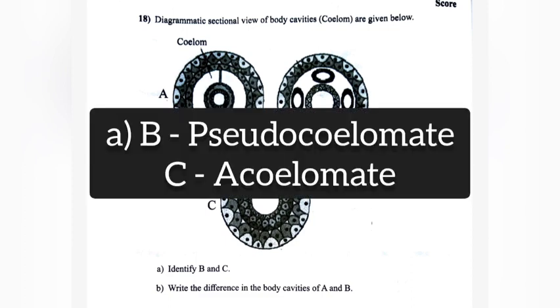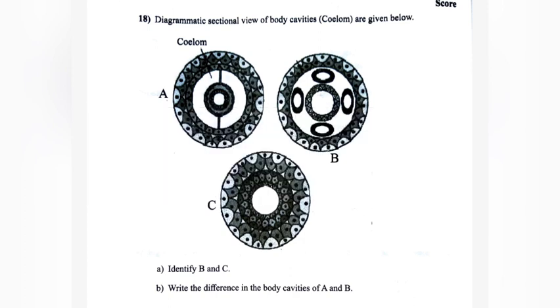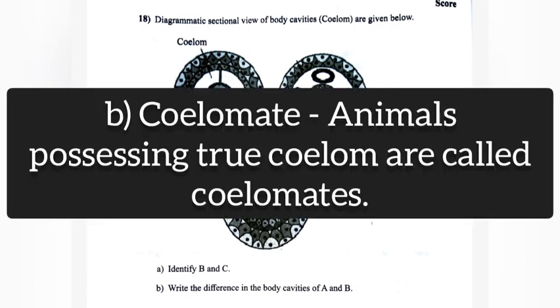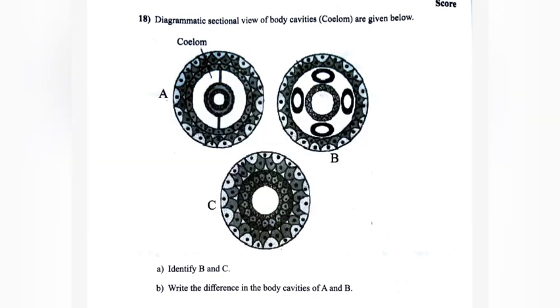Answer A: B is Pseudocoelomate, C is Acoelomate. B: Write the difference in the body cavities of A and B. Answer: Coelomate animals possessing true coelom are called coelomate.